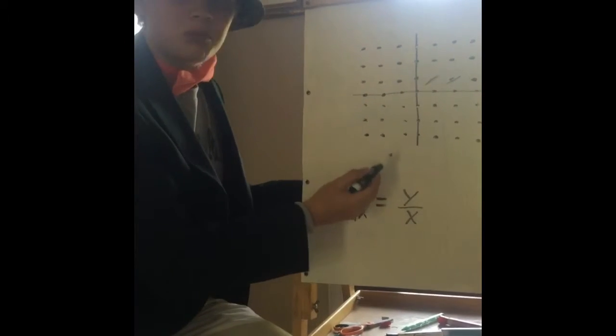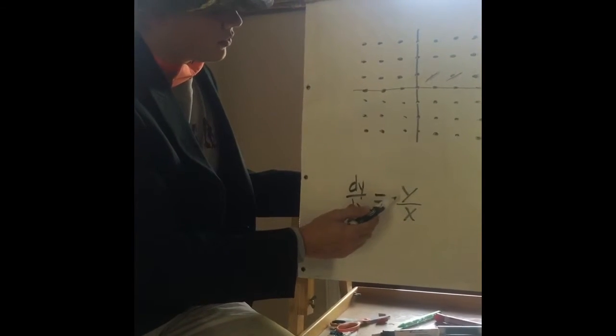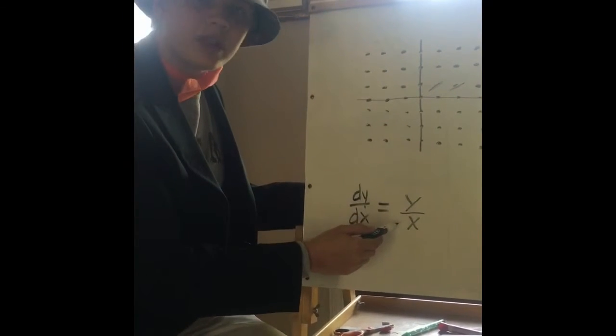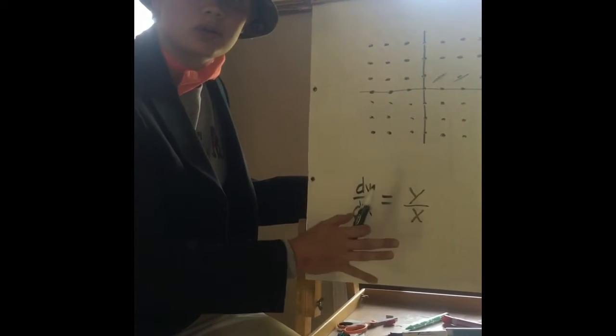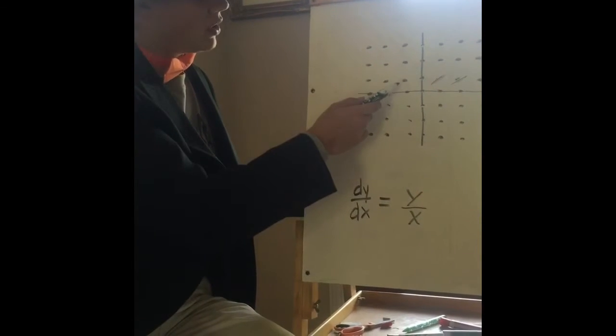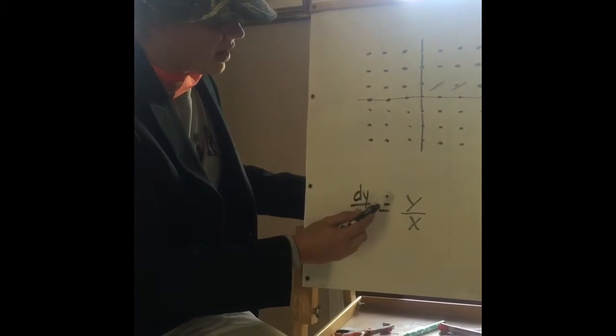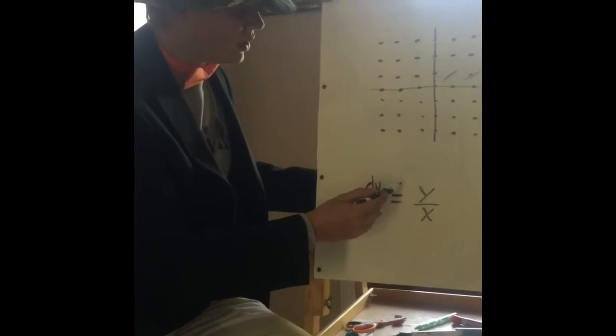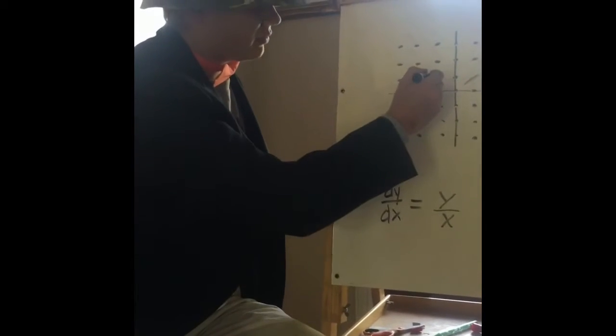Now let's use the point (0, 1). We have 1 for the y and 0 for the x. Now we have undefined, which means that there is no slope there, so we're going to leave those blank. Now let's move on to (-1, 1), which means that we have a y of 1 and an x of -1, which will give us a slope at this point of negative 1.